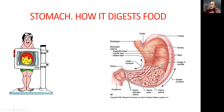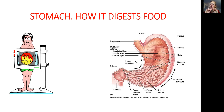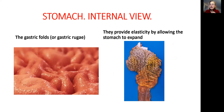Inside the stomach there is rugae. Rugae are gastric folds — they're like wrinkles. Their purpose is number one to stretch when food arrives, because the muscles stretch and accommodate a lot. The second purpose is to increase the surface where the digestive juices produced by the stomach get secreted, so you want a lot of surface to break down the food.